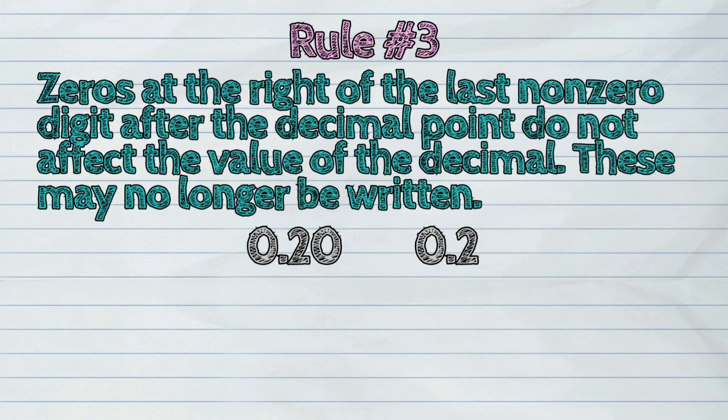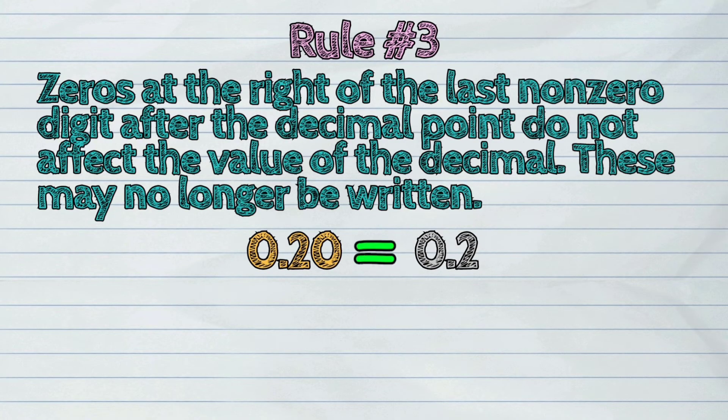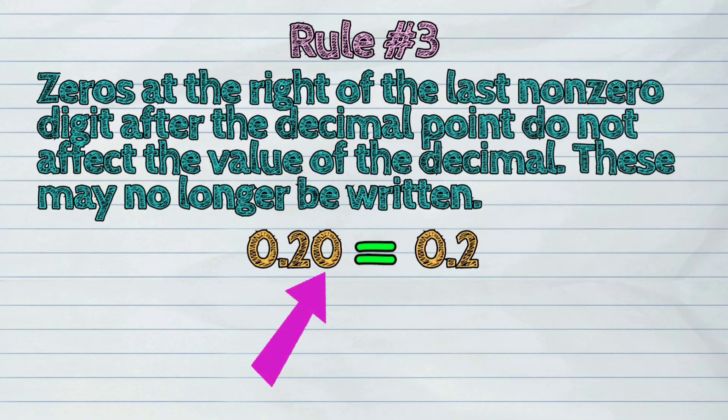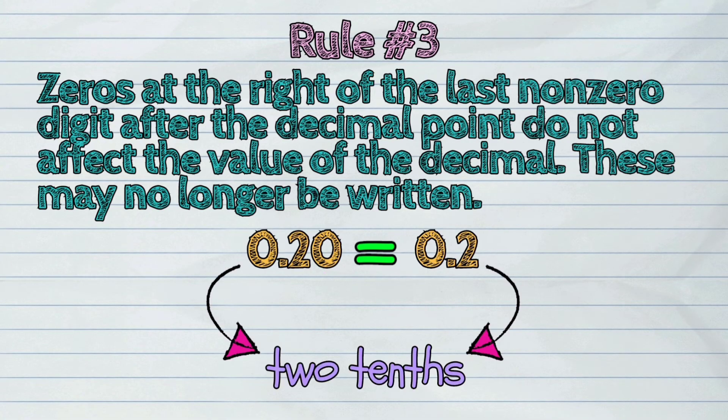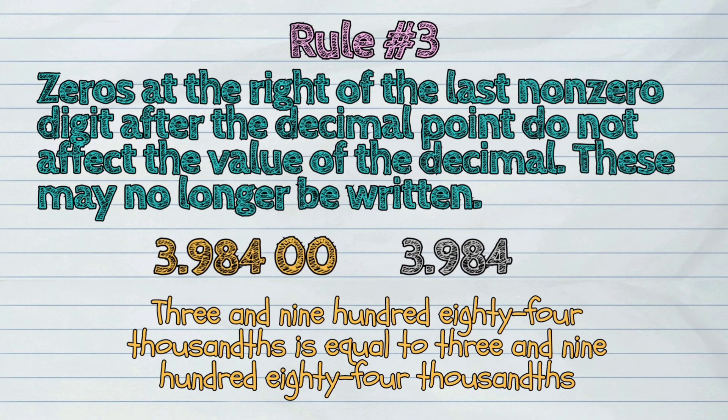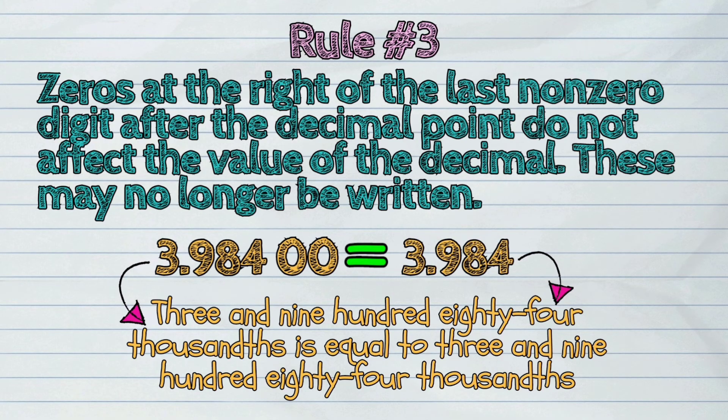Examples. These numbers are equal since the zero here after the digit 2 do not affect the value of the decimal. Both numbers are read as 2 tenths. Also, 3 and 984 thousandths is equal to 3 and 9840 ten-thousandths.